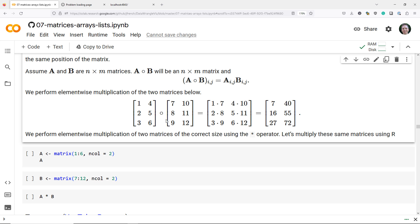And then 3 times 9 in position 3,1, and 6 times 12 in position 3,2. So here is a representation of the element-wise matrix product. When we simplify, we get the matrix on the far right over here.